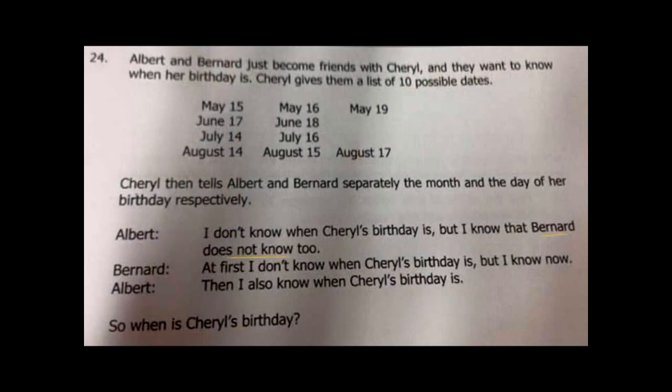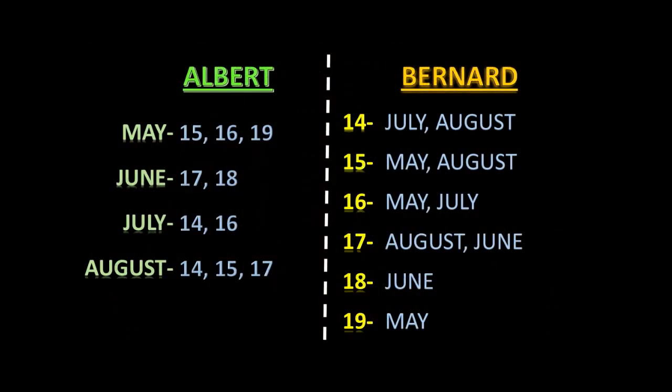Now first, Albert states that he might not know when Cheryl's birthday is, but he knows that Bernard does not know it either. Now 'Bernard does not know it' is the vital part here. If Bernard had the dates 14th, 15th, 16th, or 17th, he could have known. But if he had 18th or 19th, he would not have known when Cheryl's birthday was. So let us scratch those out from Bernard's list, and similarly 18th of June and 19th of May will be scratched off from Albert's list too.